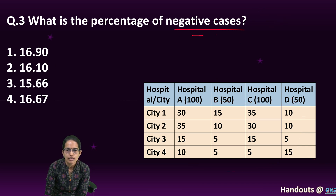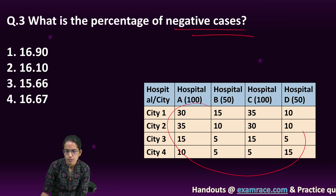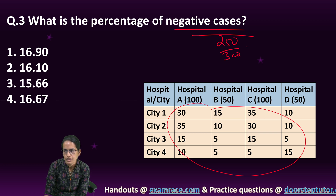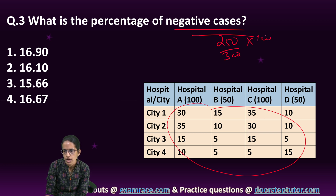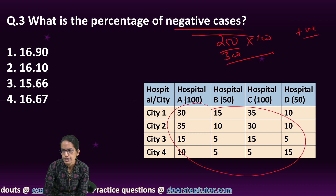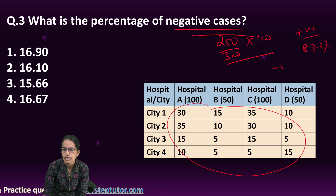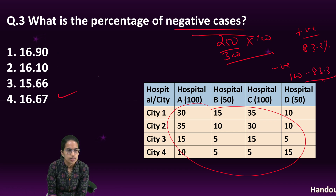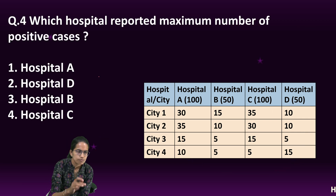The next question: what is the percentage of negative cases? We already calculated that positive cases are 250 out of 300 total. So 250 by 300 into 100 gives the positive percentage — approximately 83.3%. Therefore, the negative cases percentage is 100 minus 83.3%, which is around 16.6%.